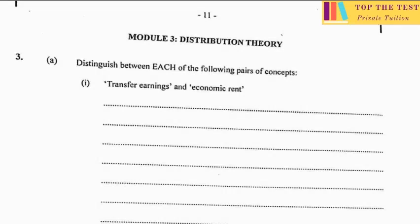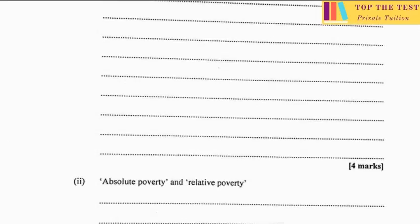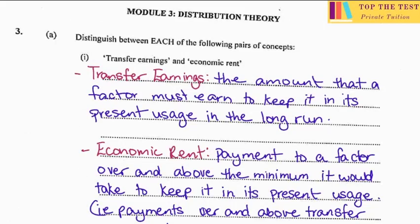For Part 3a, we have to distinguish between each of the following pairs of concepts. The first pair is transfer earnings and economic rent, for four marks. The second pair is absolute poverty and relative poverty, for four marks. Transfer earnings is the amount that the factor must earn in its present usage in the long run.